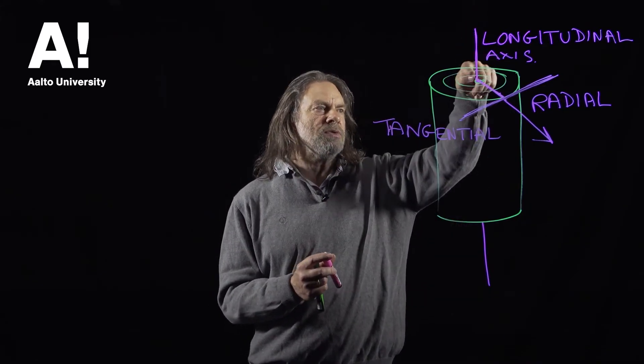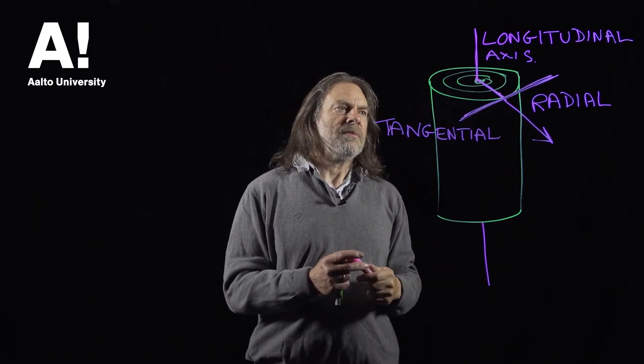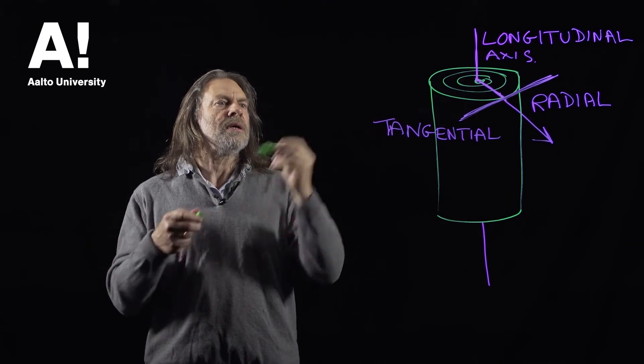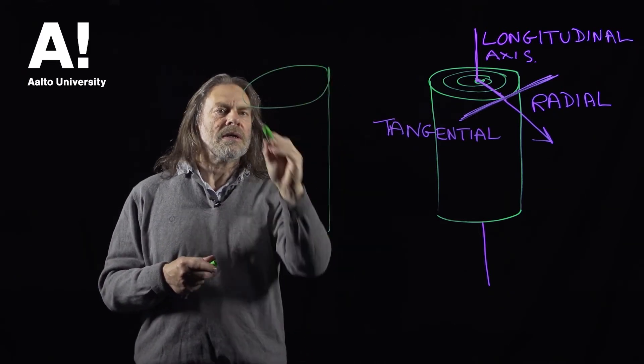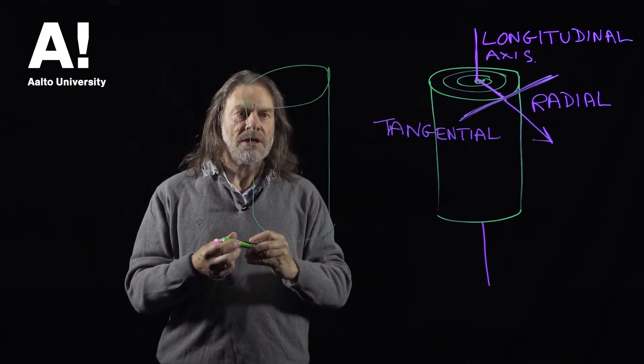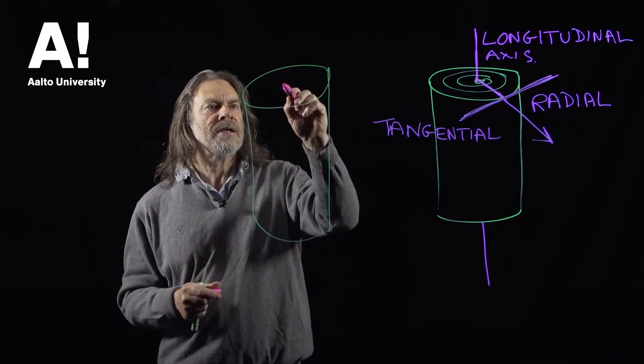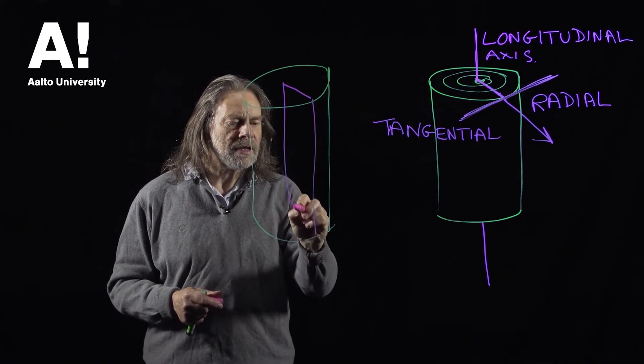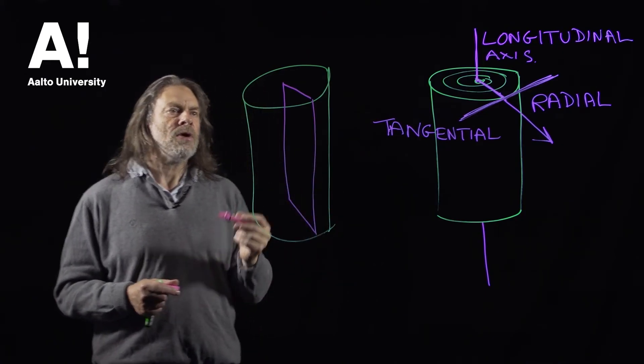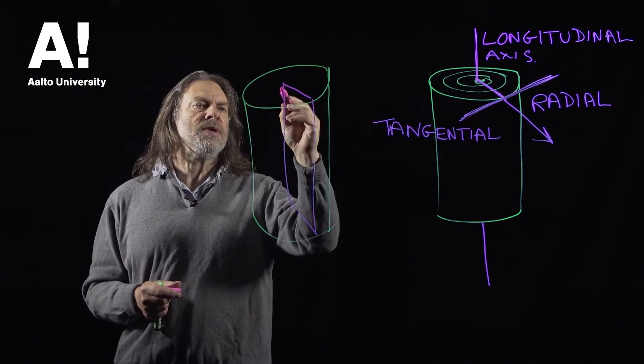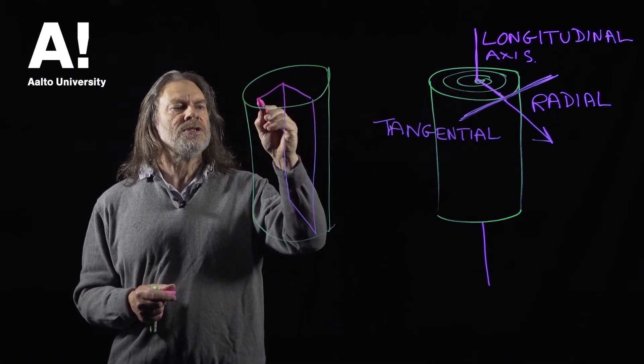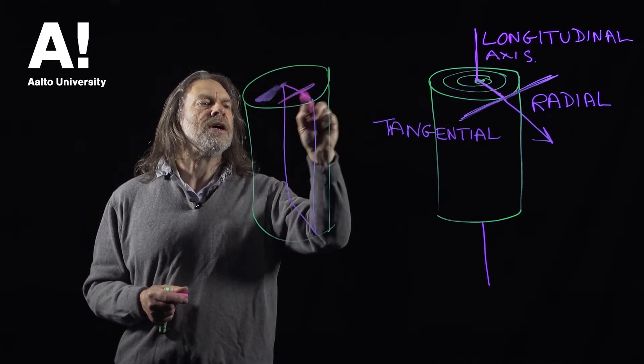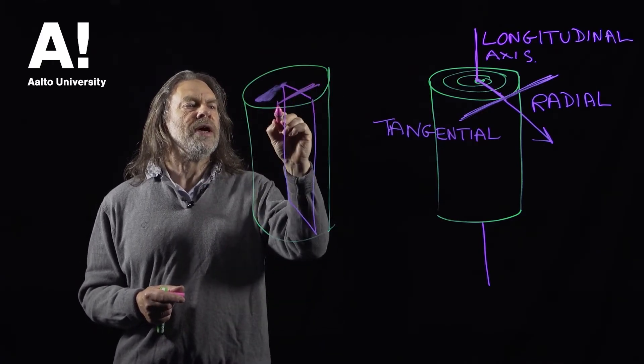So we can have a longitudinal radial plane, so that would be if we draw the tree trunk again like this. So that plane, the longitudinal radial plane looks like that, or we can have a tangential plane, so that would be running through there.